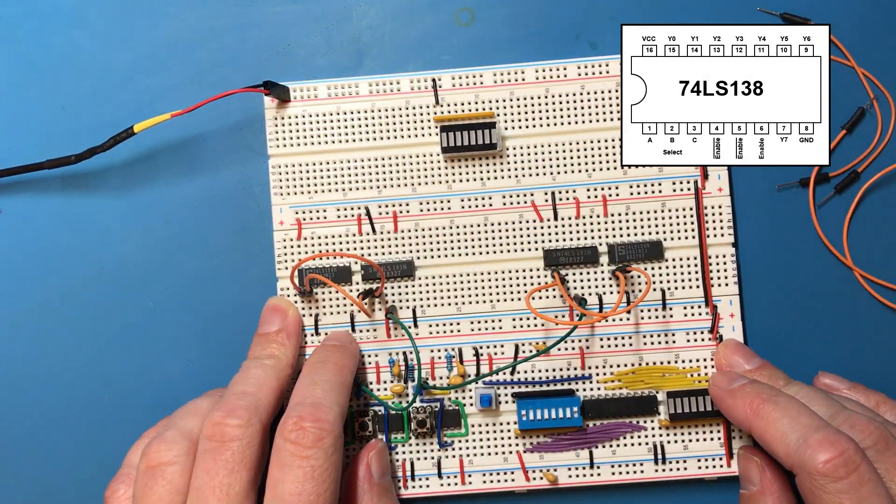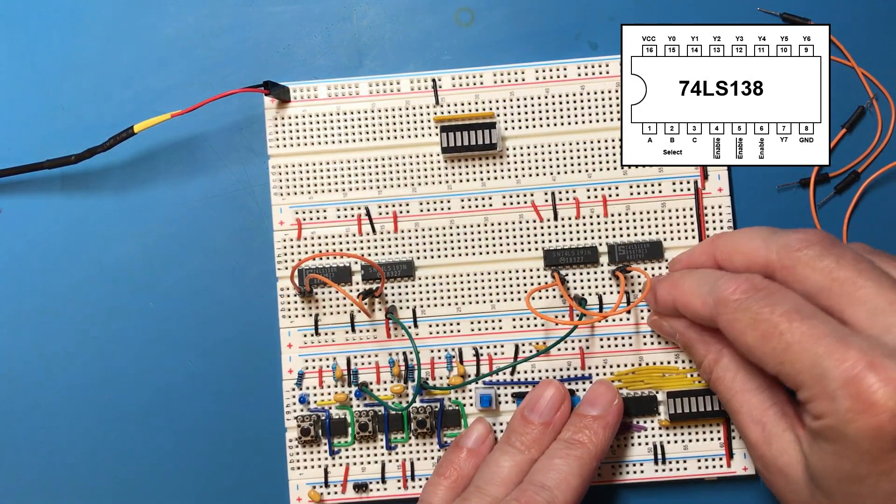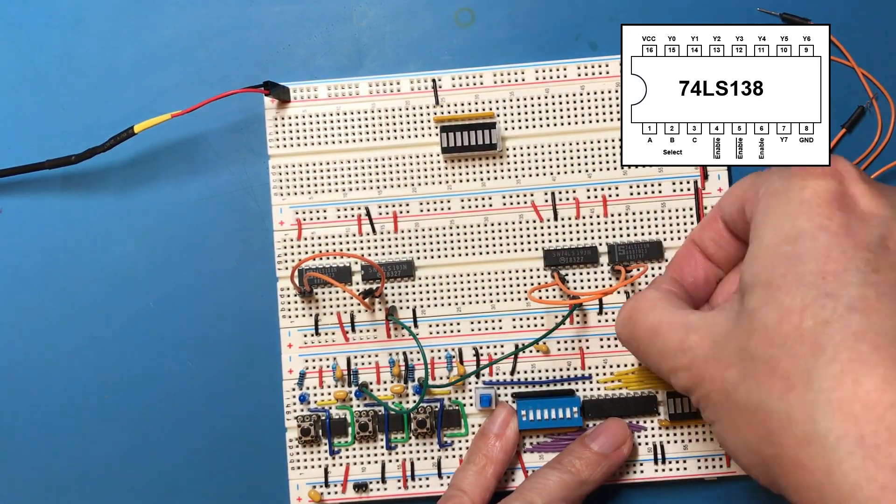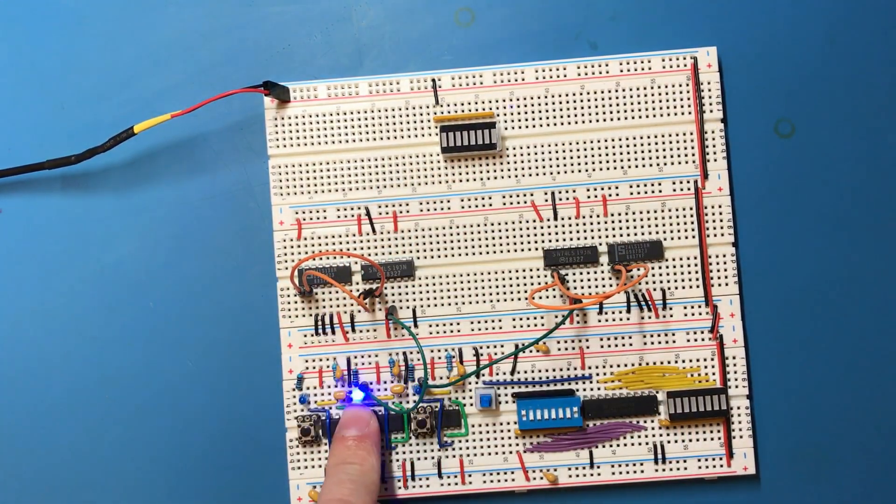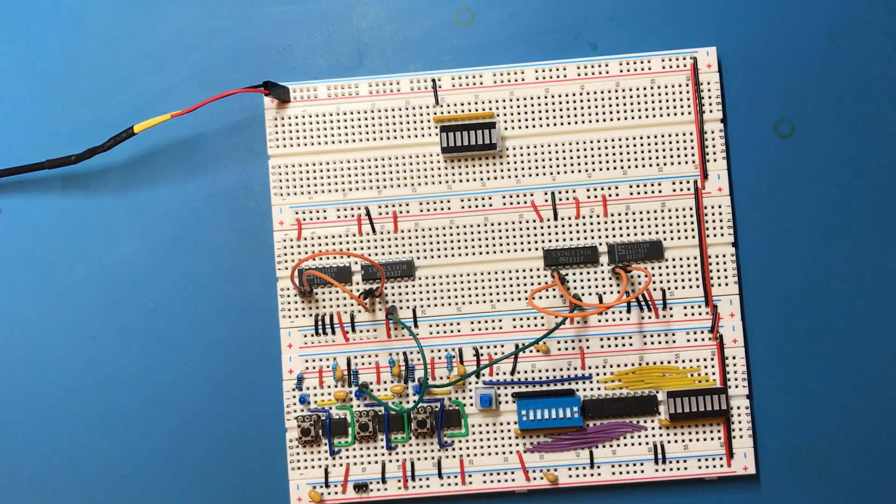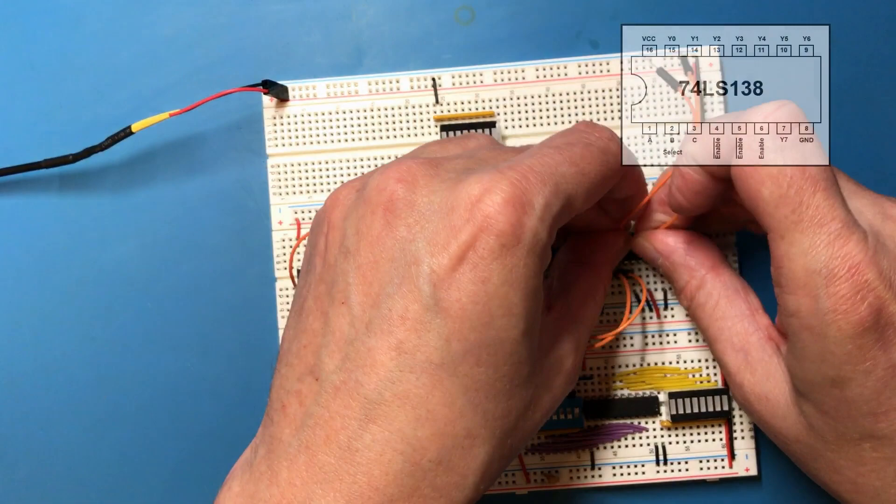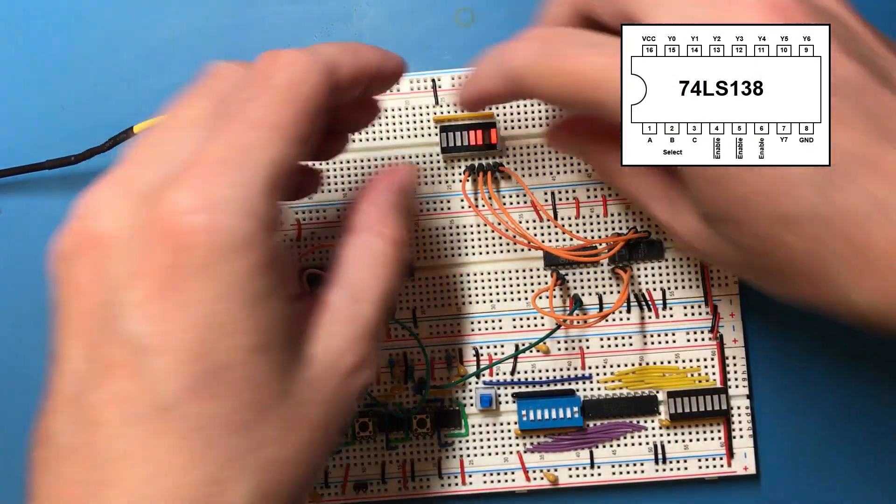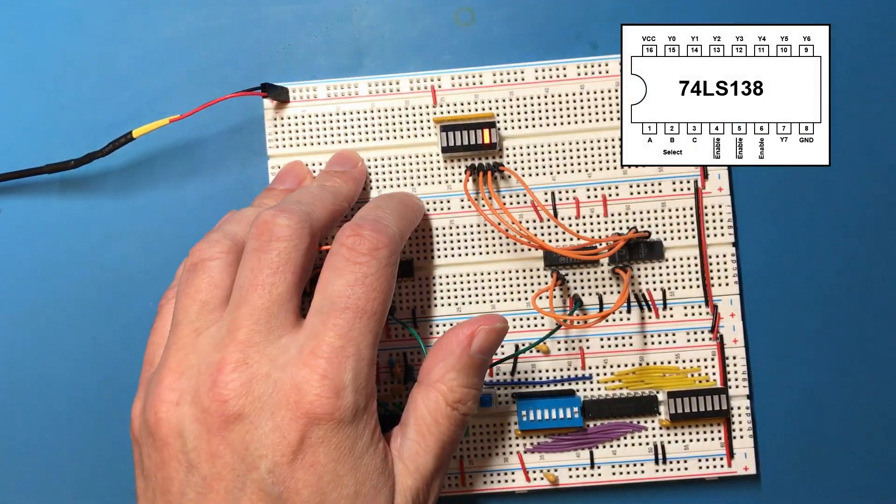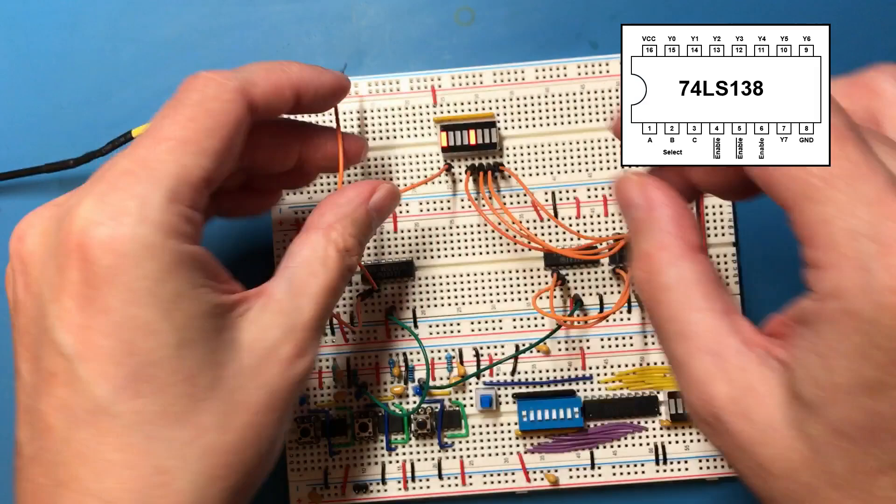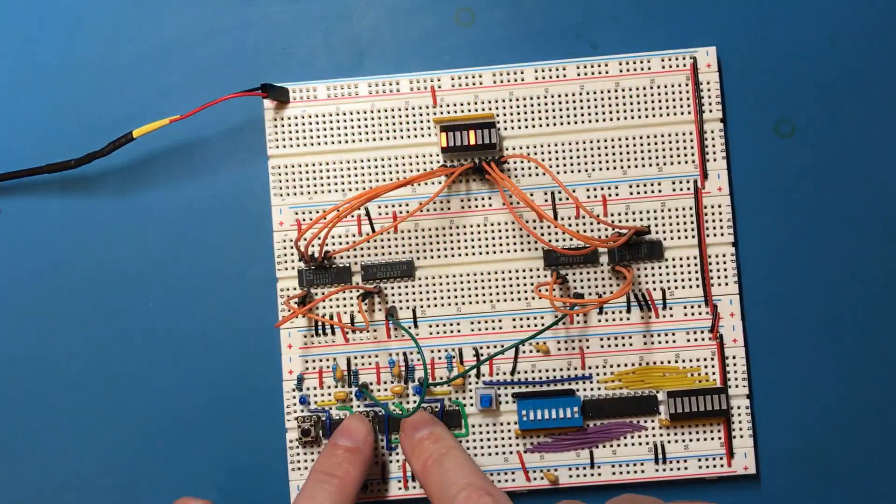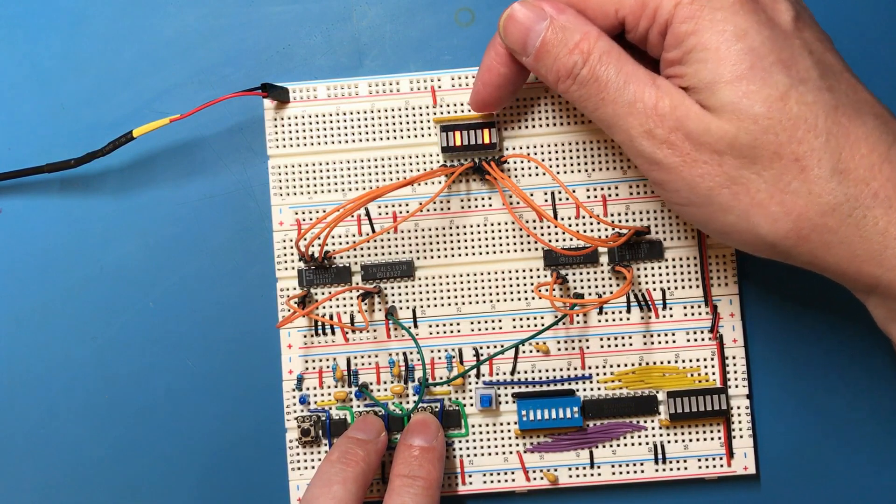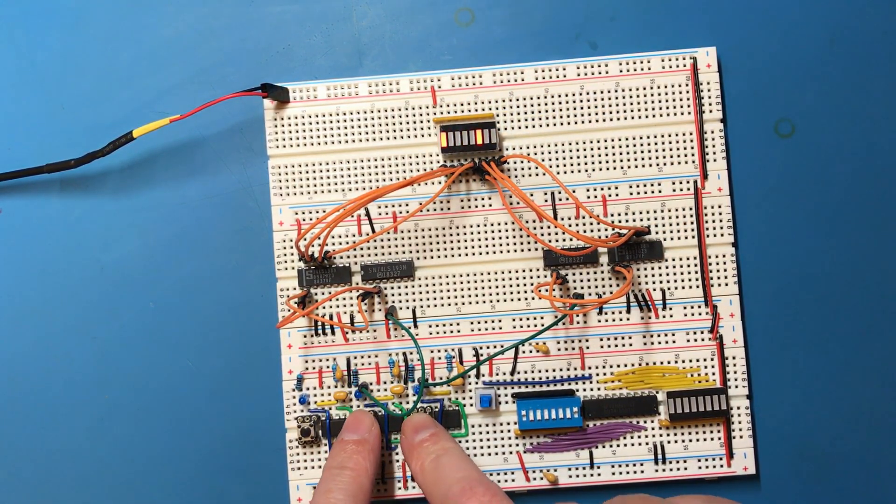I need to do the same with the inputs over here. Pull the third input low. Now we've got these enable inputs. The active high enable just bring that directly high and then we've got two active low enables. Now in theory these should be cycling through four output lines or the first four output lines from the decoder. Okay it is but these are active low outputs so we'd be better off switching this around.